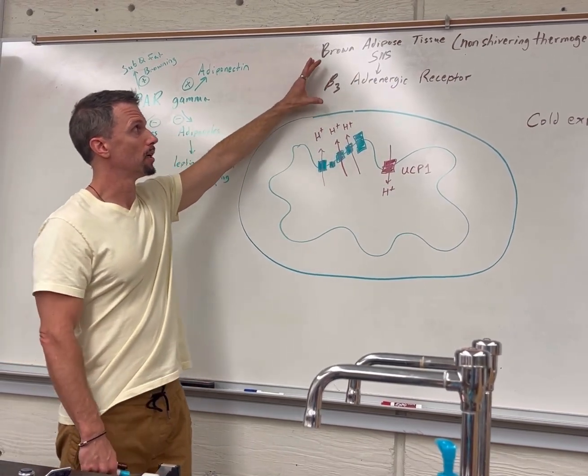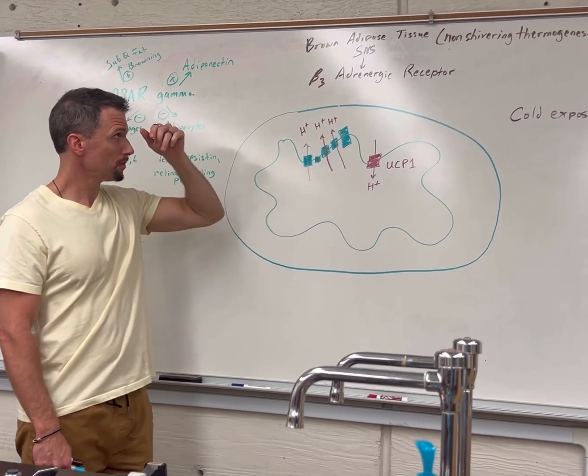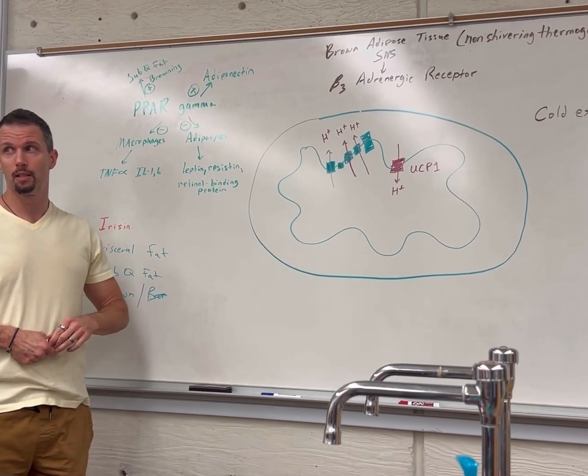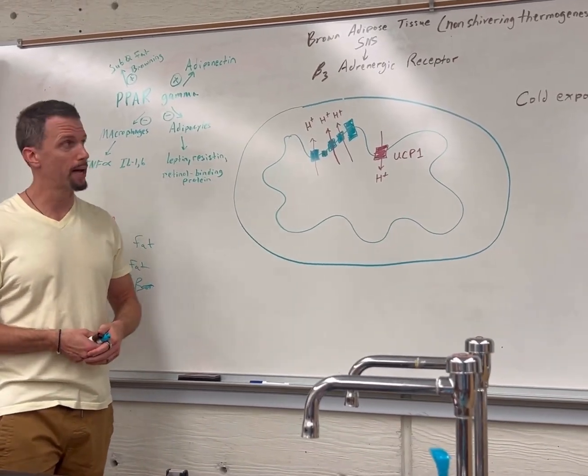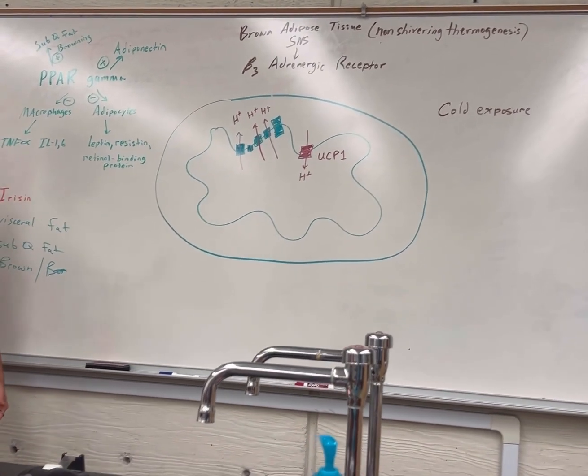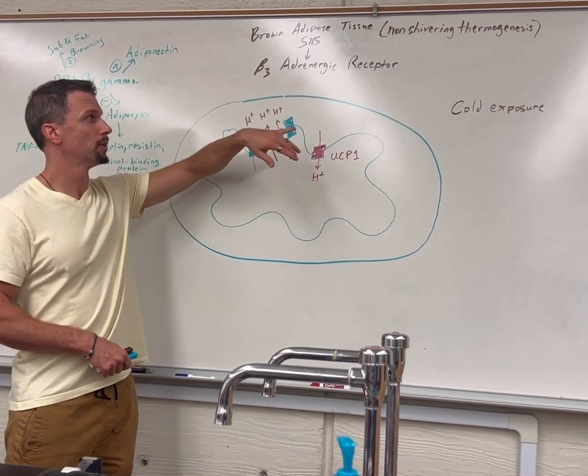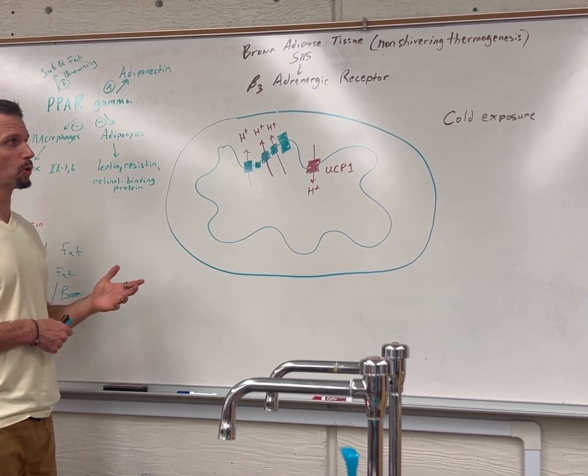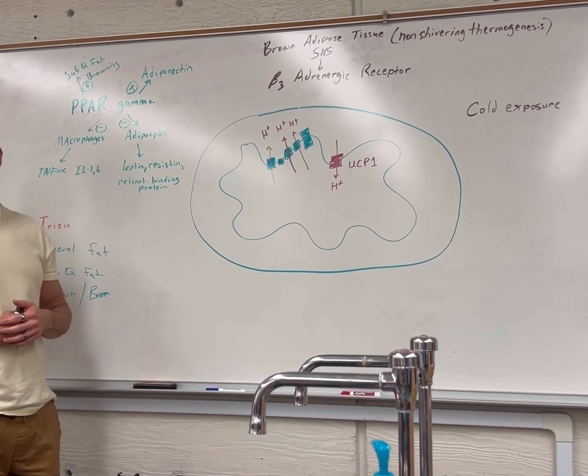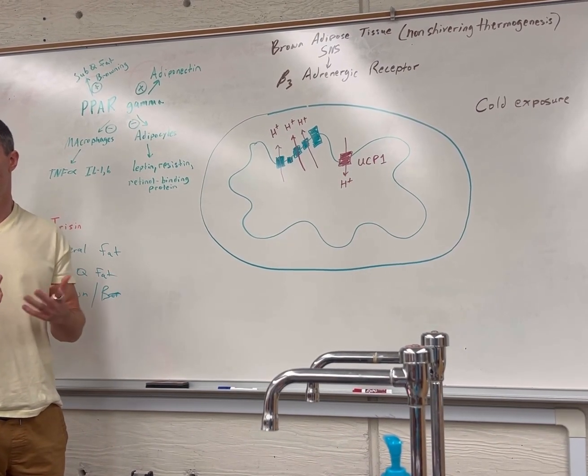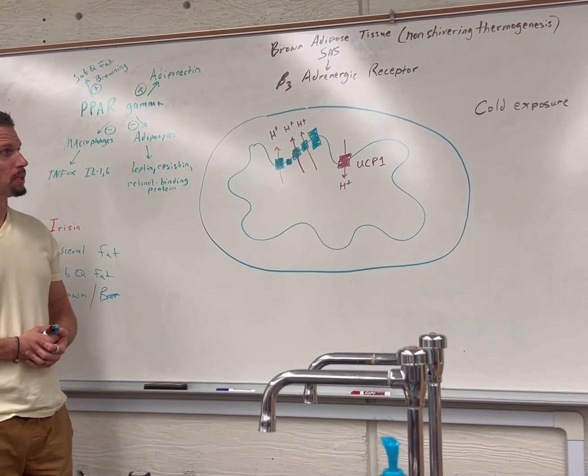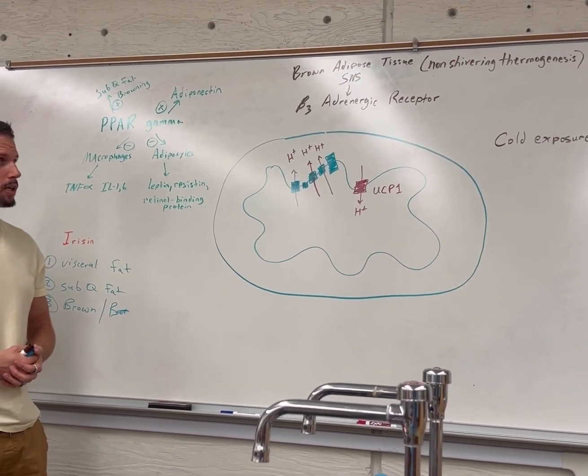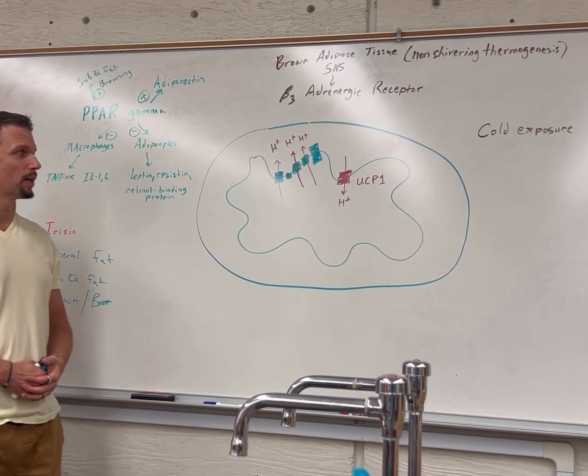Beta-3 adrenergic receptors aren't too ubiquitous in the body. We see them in the bladder—mirabegron works for overactive bladder by activating beta-3 receptors on the detrusor muscle. We also have beta-3 receptors on brown and white adipose tissue. Studies show that people sleeping at 64 degrees over eight weeks developed more brown adipose tissue. It doesn't have to be extreme cold.